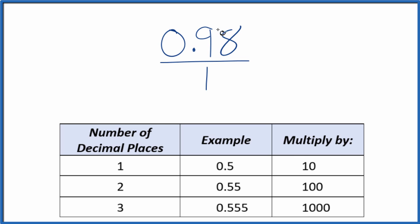What we need to do is get this to a whole number. And to get this to a whole number, I see I have two decimal places. If we have two decimal places, we can multiply by 100. So let's multiply 100 times 0.98, and we end up with 98. So we have our whole number.